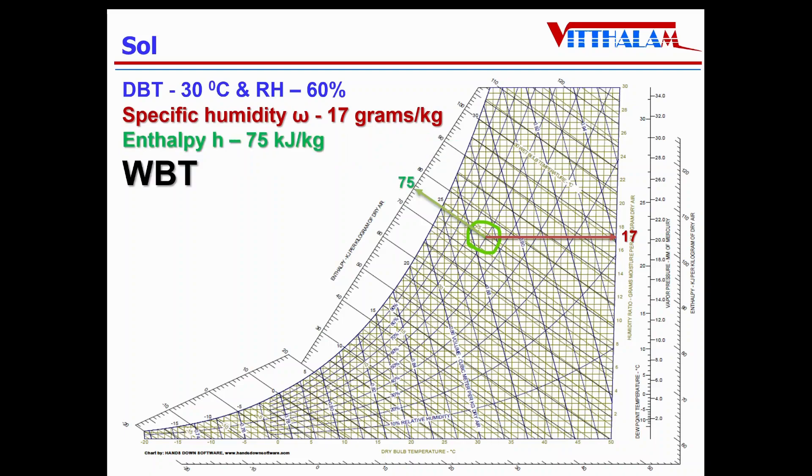Third property is the WBT, wet bulb temperature, which is also an inclined line. And when I draw inclined line and it intersects the saturation curve, the value on the saturation curve on WBT, in this case it is 24.8 degrees Celsius.